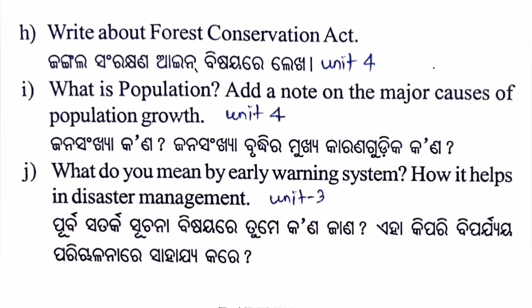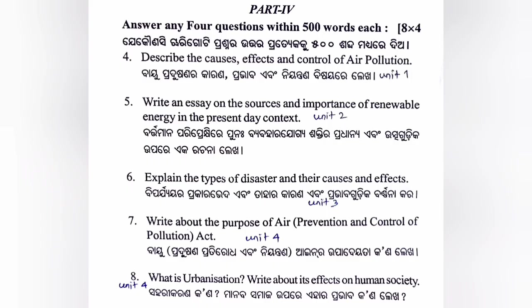Part 4 — Unit 4: very long type question. Describe the causes, effects, and control of air pollution — Unit 1. Write an essay on the sources and importance of renewable energy in the present-day context. Explain the types of disaster and their causes and effects. Explain the types of disaster management. Write about the purpose of the Air Prevention and Control of Pollution Act — Unit 4.